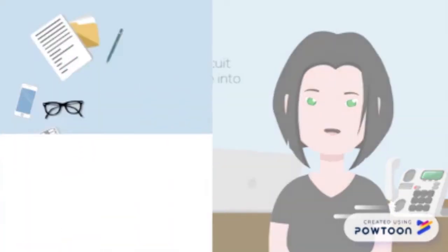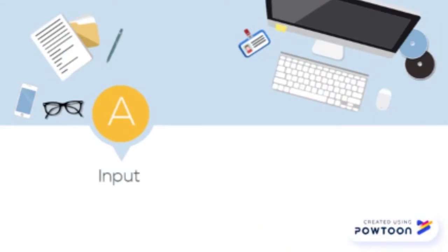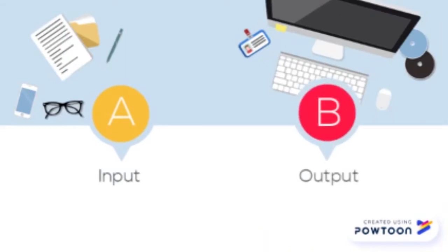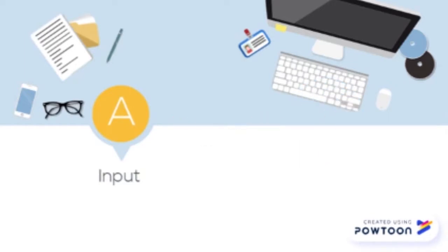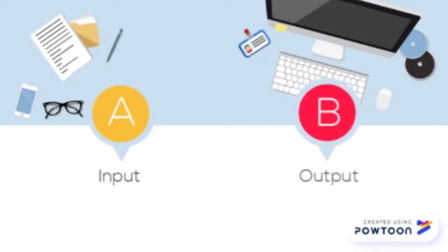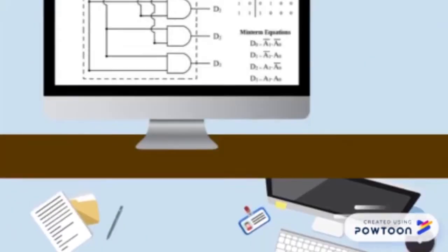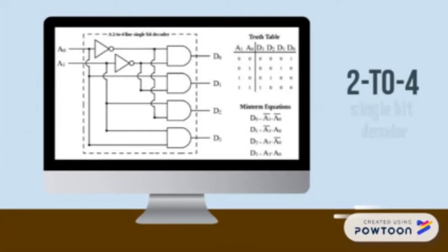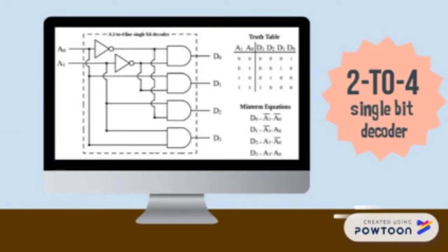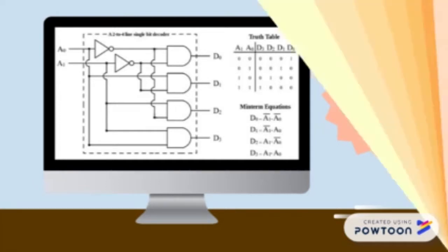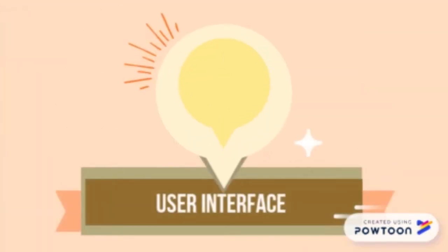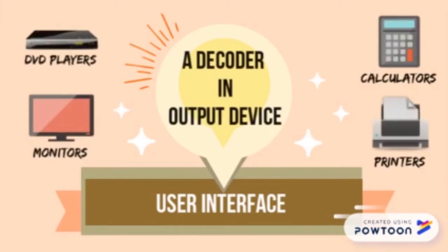It has multiple inputs and outputs, and it's usually used to convert coded inputs into coded outputs, provided both of them are different from each other. The most common types of decoders used in digital electronics are 2-4, 3-8, and 4-16 line configuration. A decoder is used in most output devices such as monitors,